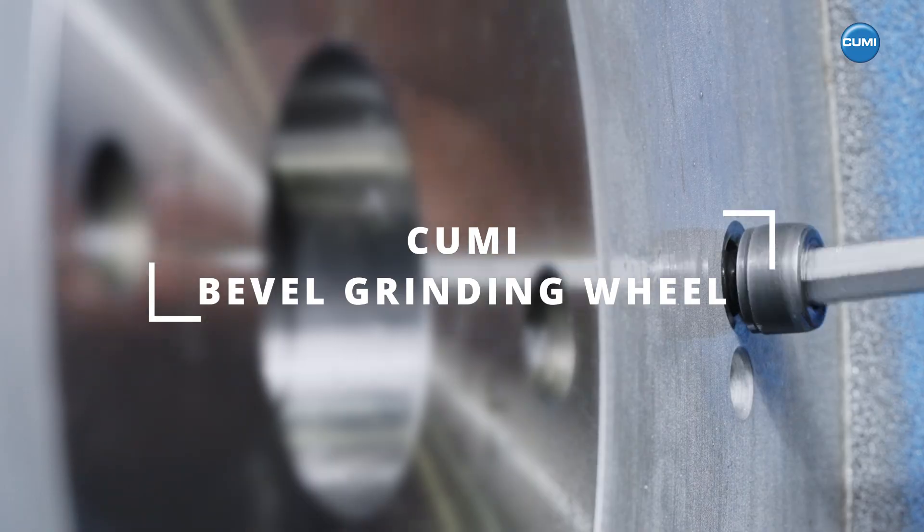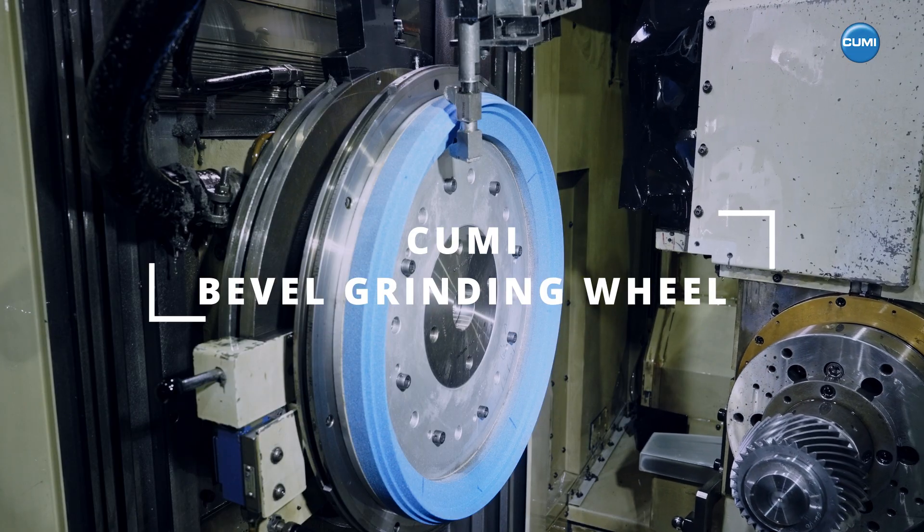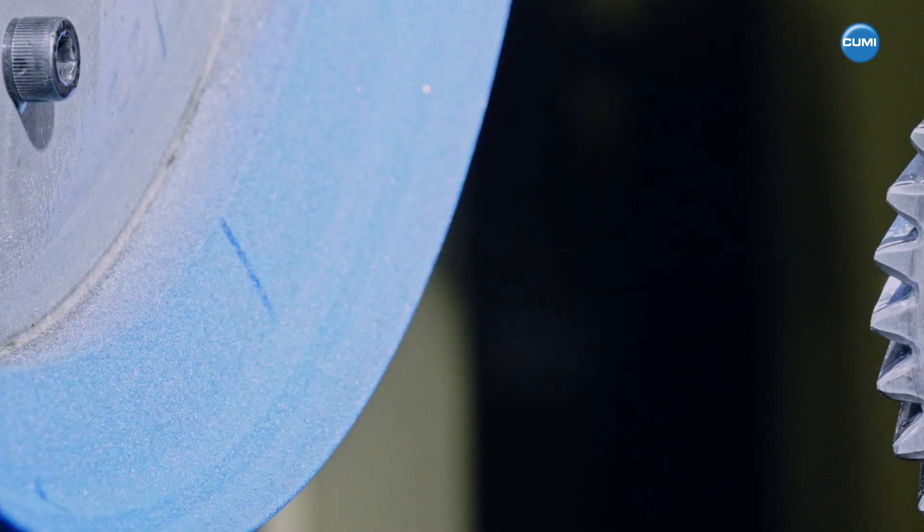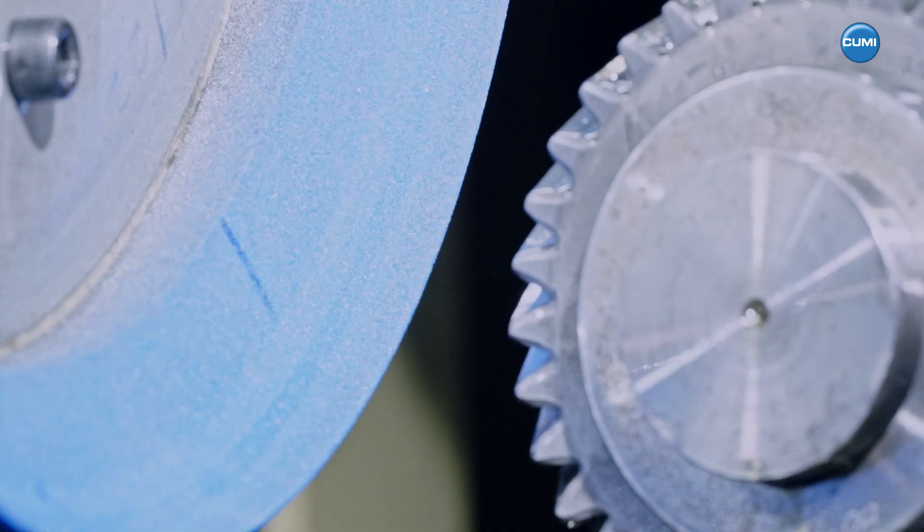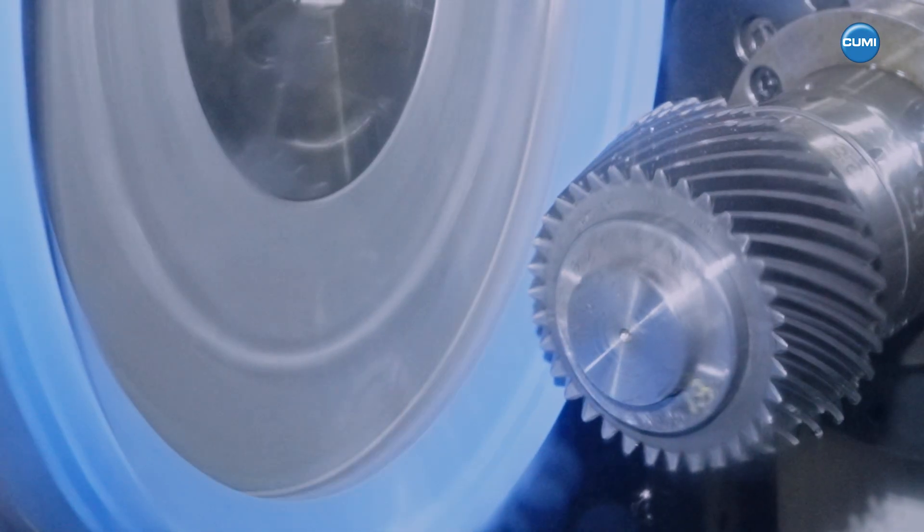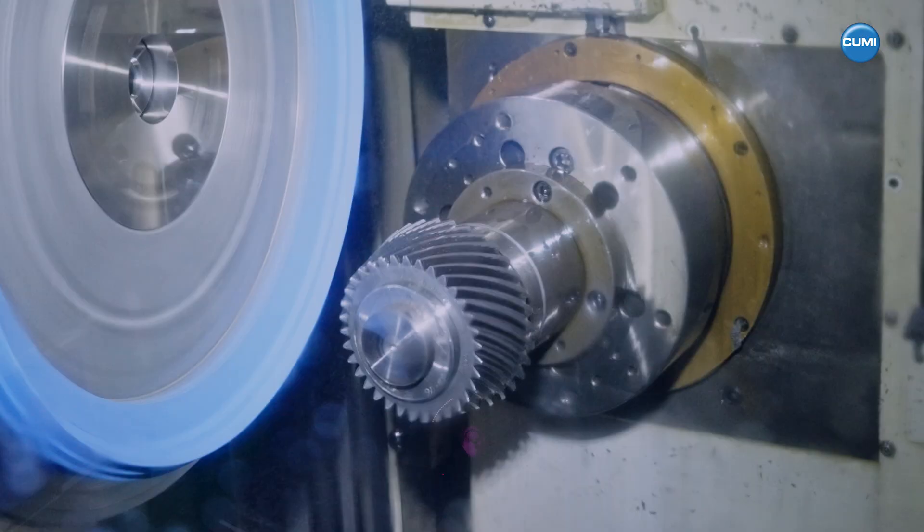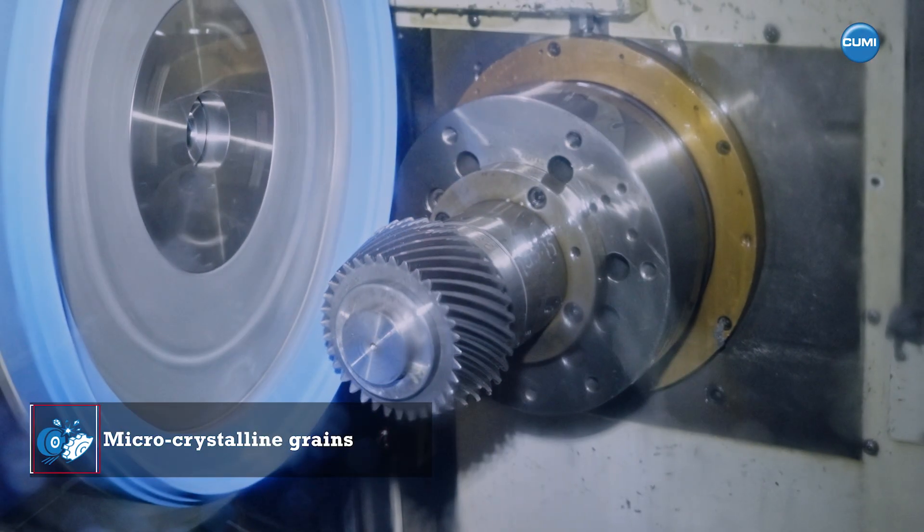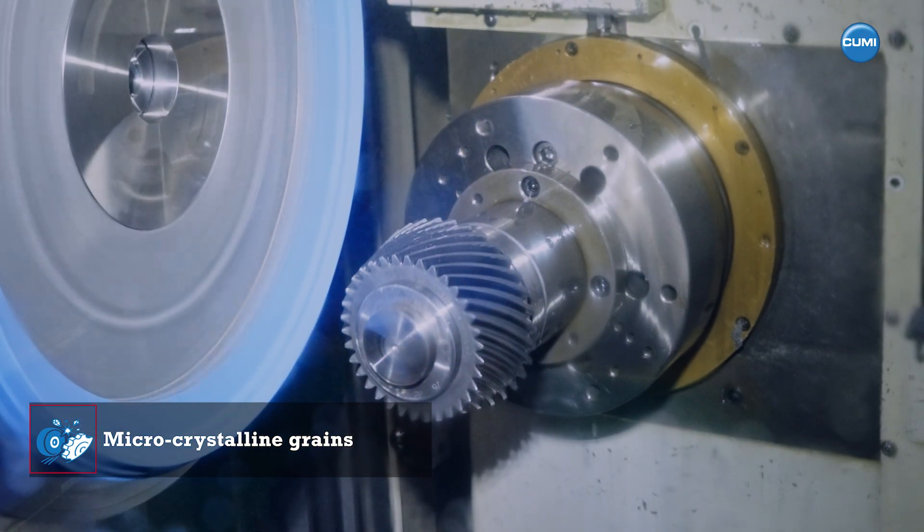CUME Bevel grinding wheels ensure precise bevel gear grinding with superior material removal, flawless finishes, extended wheel life, and maximized productivity. These wheels provide micro-crystalline grains that enable high-stock removal and allow self-sharpening for efficient cutting.